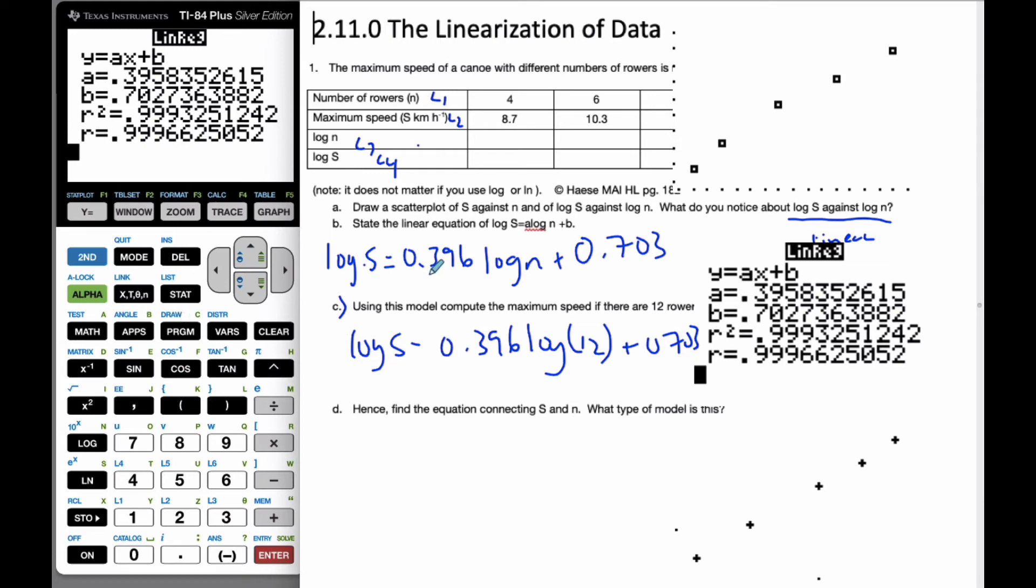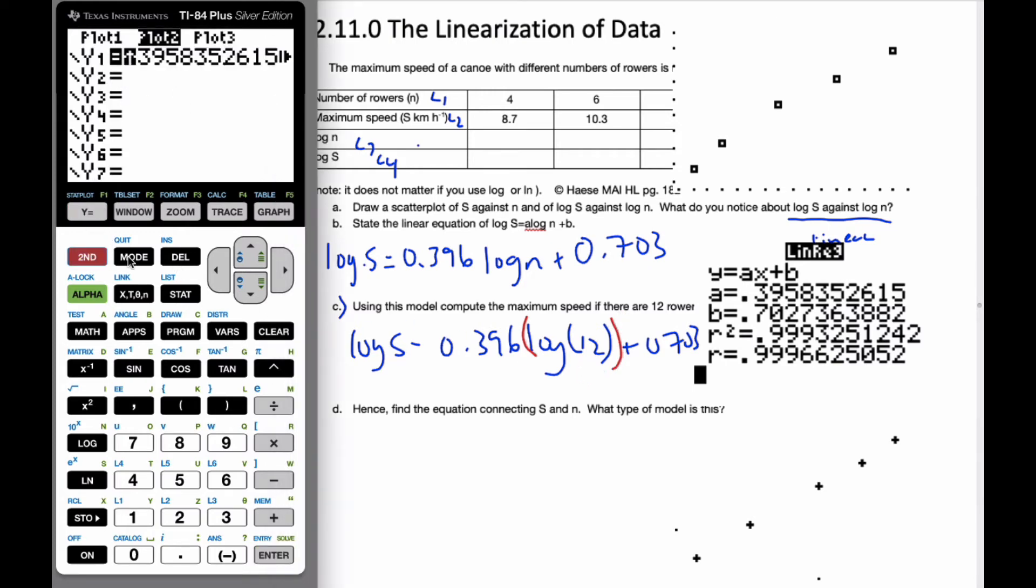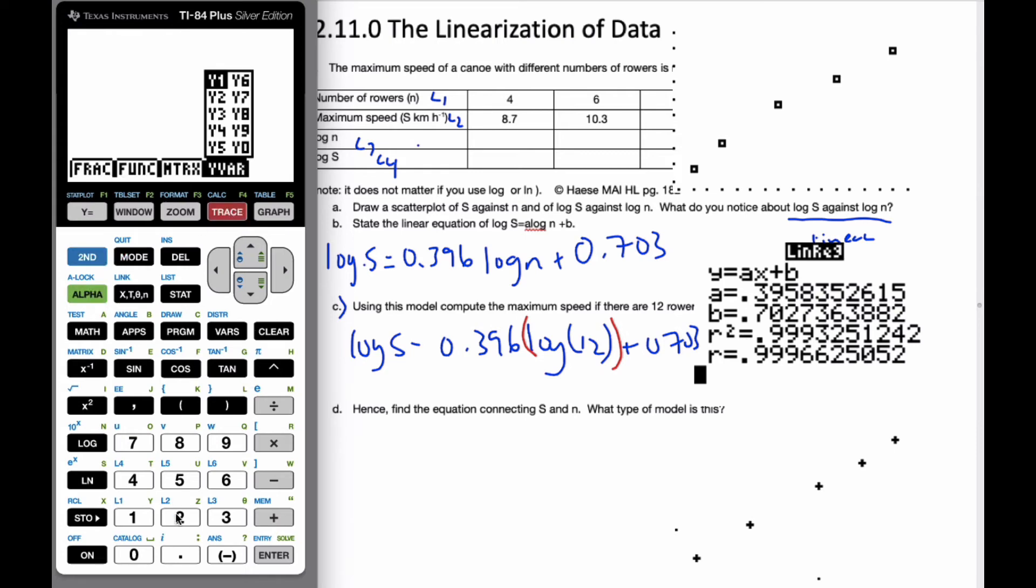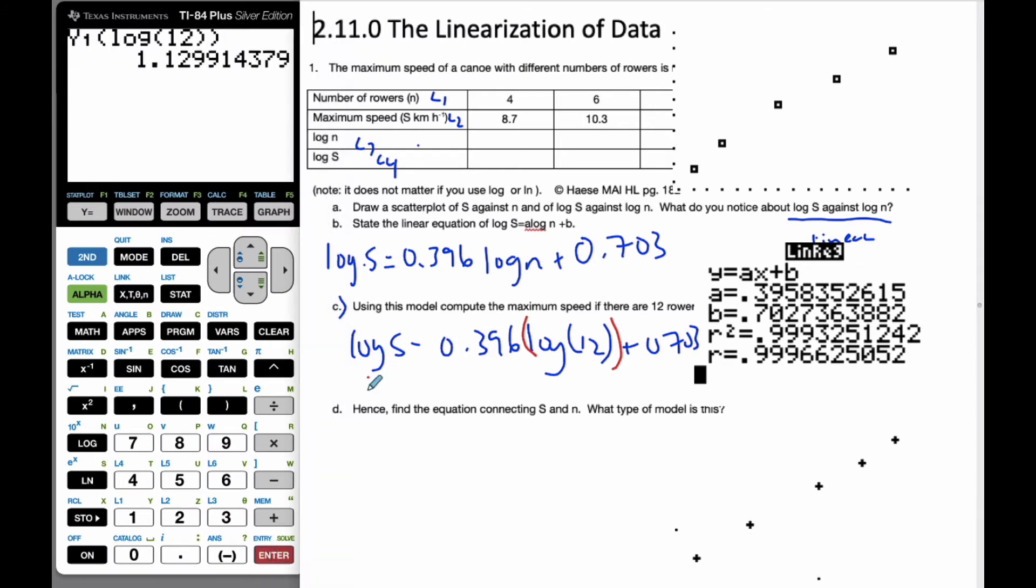So then I know that log S is equal to 0.396 log of 12 plus 0.703. So, the calculator believes that this whole thing here is X. So I want to use my Y1, which is here. If I use my function notation idea, I'm going to use Y1. I'm going to put in log 12. There's my 12 rowers. And so, what I get, I get that the log of S is equal to 1.13.